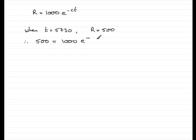So I'm going to actually turn that around, I'm not going to write minus C times 5,730, I'm going to write minus 5,730 C. Okay, just looks better I feel.